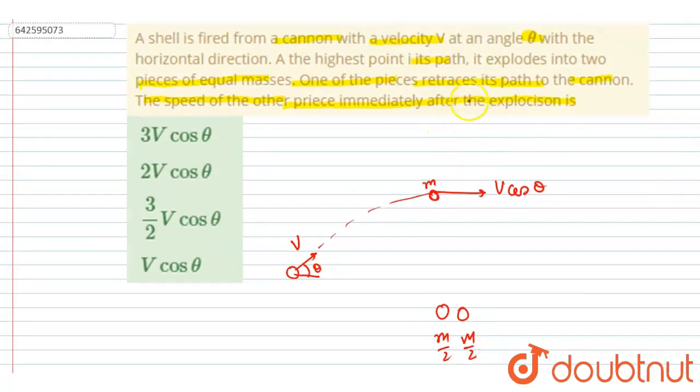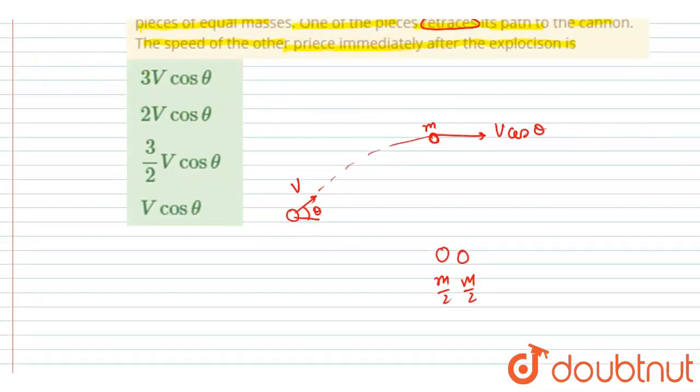the question that one of the pieces retraces its path. What does it mean? It means that the path it came, it will go on that path like this.